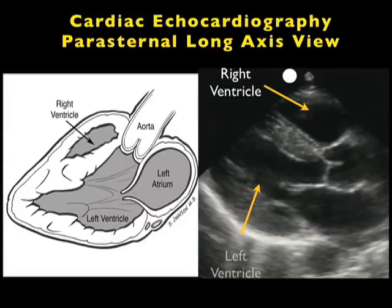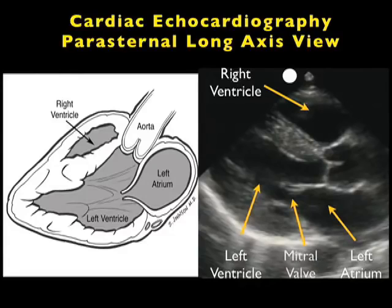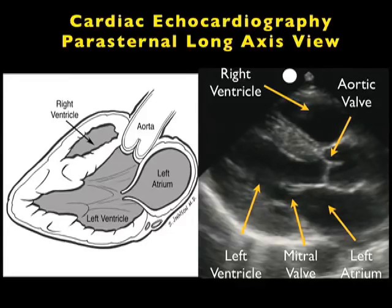Let's look at the ultrasound still image here to the right. Again we see the superficial right ventricle. Posterior we see the left ventricle with its more muscular and hypertrophic walls. Notice the left atrium is seen to the right of the left ventricle and the mitral valve in between the two chambers — we categorize this as left ventricular inflow tract. Note the aortic valve sitting right above the left atrium, and we see a little bit of the aortic root there. This is what we categorize as aortic outflow tract.